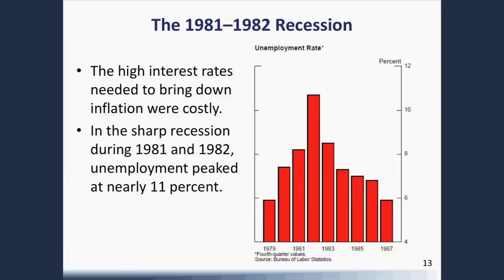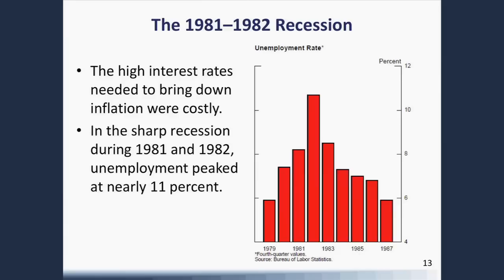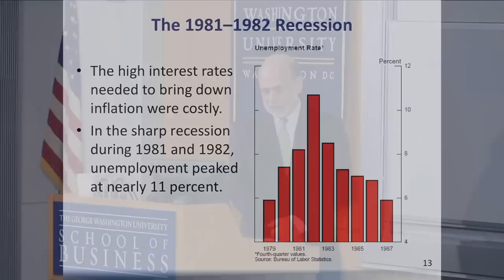However, nothing is free, and one of the effects of these policies was to raise interest rates quite sharply. I remember in 1981-82, just out of graduate school, looking at the possibility of buying a home and being informed that the mortgage rate for a 30-year mortgage was 18 and a half percent. The high interest rates which were necessary to bring down inflation also caused a very sharp recession. The unemployment rate in 1982 was almost 11 percent — even higher than we saw in the most recent recession. So there was definitely a very negative side effect from Volcker's activities.